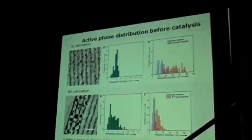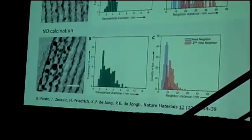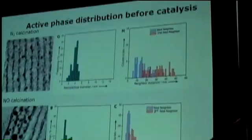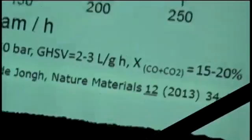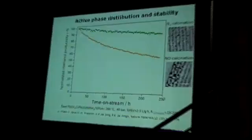If we quantify all this data, we get a particle size distribution — the NO-calcined particles are a bit larger. More importantly, the particle-particle distances to the nearest neighbors are very much larger for the N2 calcination than for the NO calcination. These small interparticle spacings with NO calcination versus the much larger spacing with nitrogen have a direct bearing on stability: the nitrogen-calcined catalyst shows very stable performance, while the NO-calcined catalyst gives much more rapid deactivation.